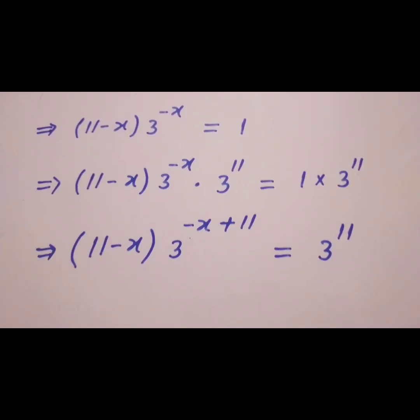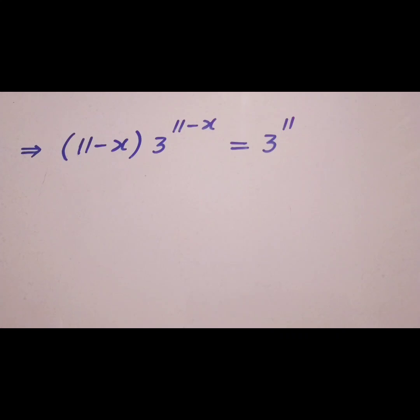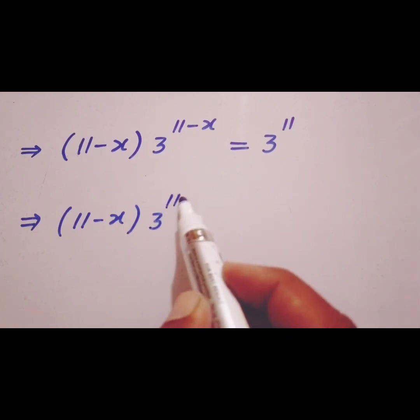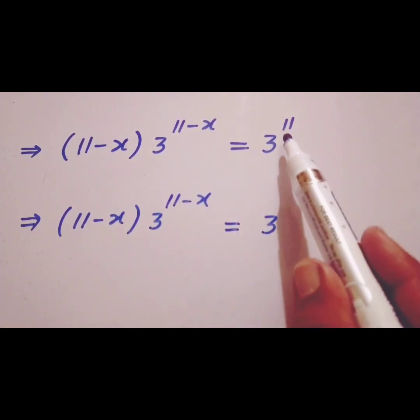Now, (11 - x) × 3^(11 - x) = 3^11. This can be written as (11 - x) × 3^(11 - x) = 3^11, which equals 3^(2 + 9).